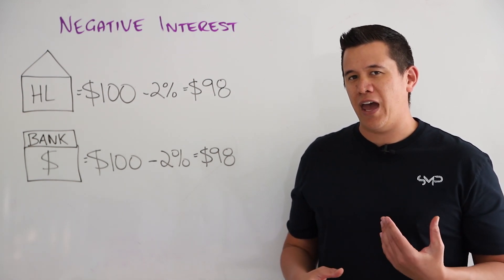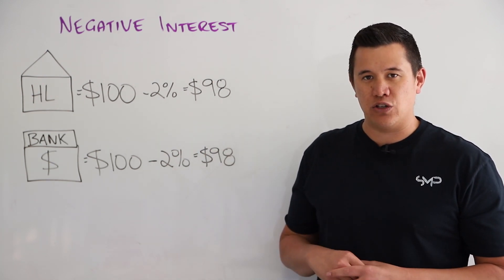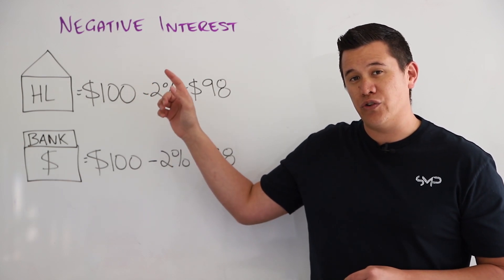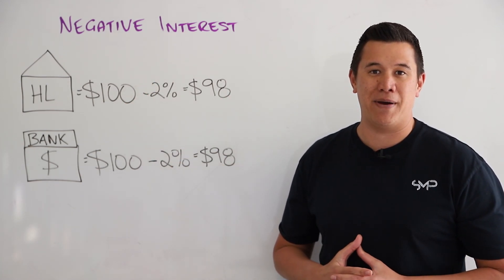To give you an example of how it may affect us in Australia if it was implemented. If we were to have a negative 2% interest rate and we had a home loan of $100 over the course of the year, the good news is we'd only have to pay back the bank $98.